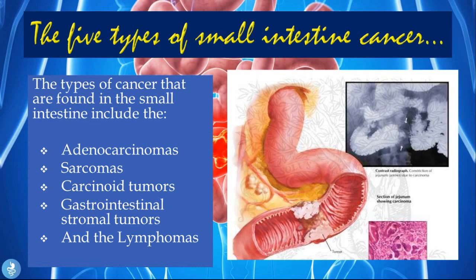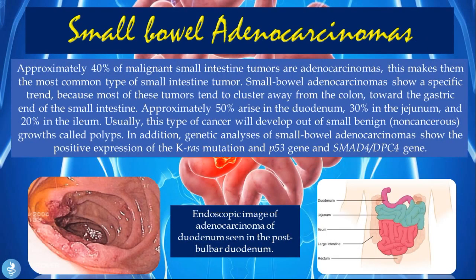Small bowel adenocarcinomas: approximately 40 percent of malignant small intestine tumors are adenocarcinomas, making them the most common type. Small bowel adenocarcinomas show a specific trend — most of these tumors cluster toward the gastric end of the small intestine. Approximately 50% arise in the duodenum, 30% in the jejunum, and 20% in the ileum.